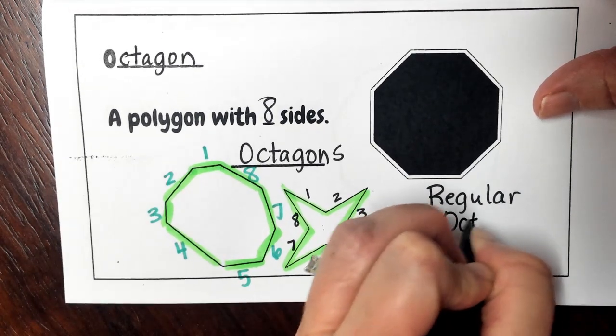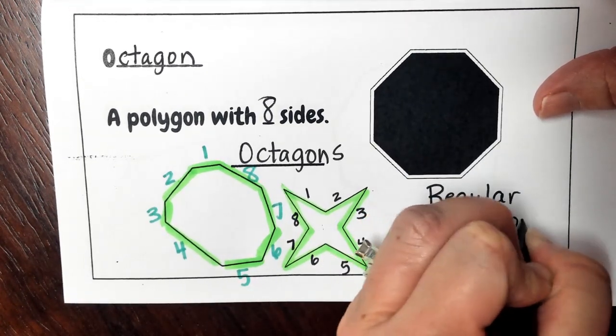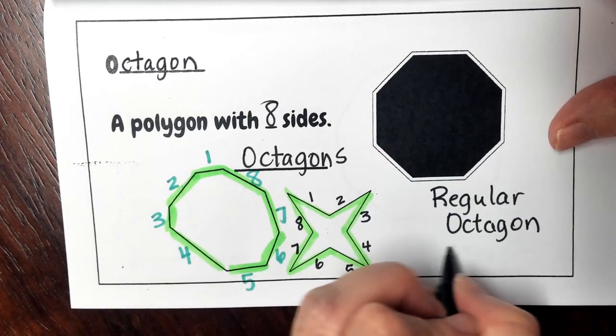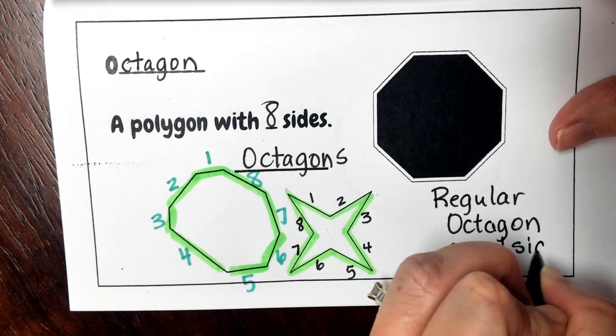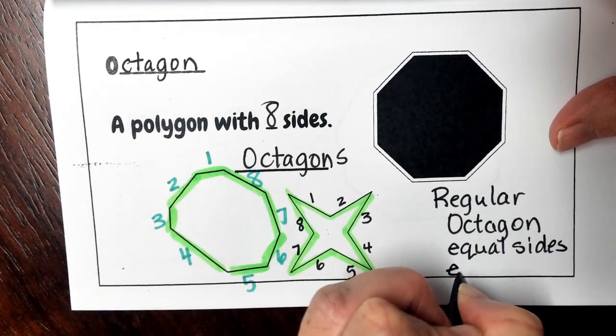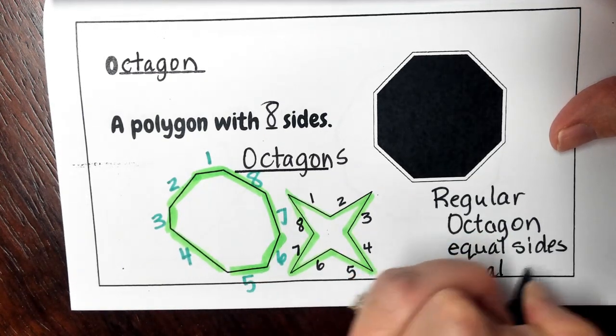Your regular octagon, again, is going to have even sides and even angles. So we're going to say equal sides, equal angles.